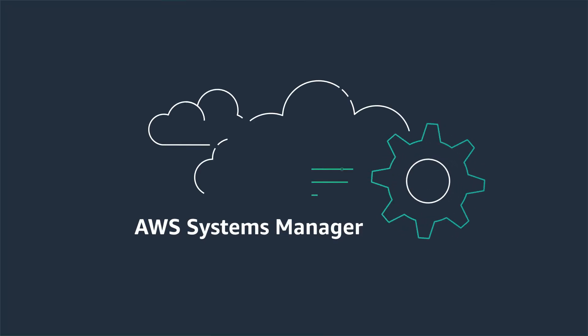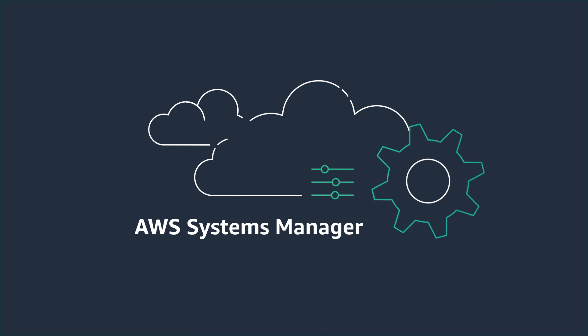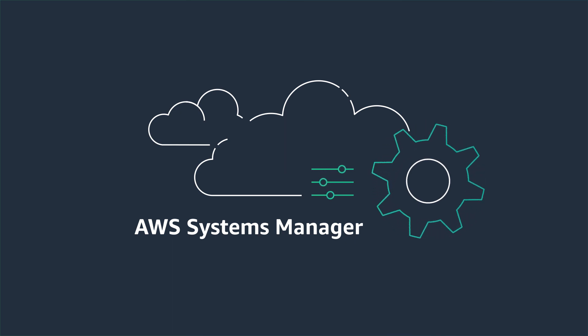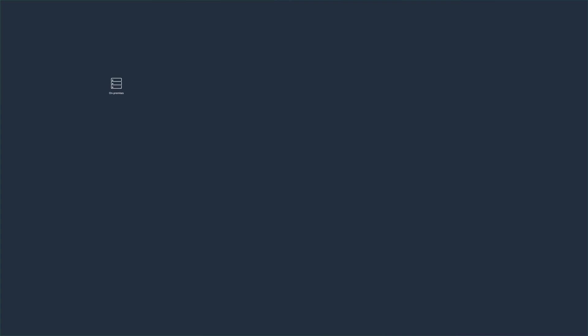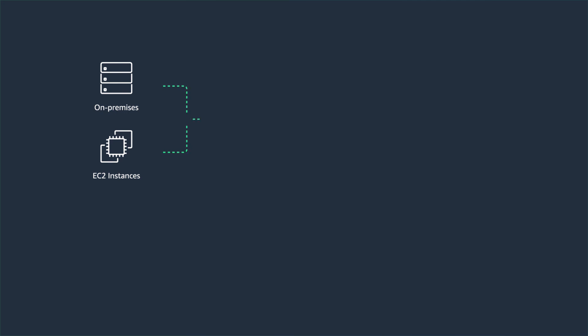As I started using AWS, I came across the AWS Systems Manager service — that was a game-changer for me. I could manage on-premises servers and Amazon EC2 instances alike by installing a single agent. Once the Amazon SSM agent was installed, servers and EC2 instances — essentially the whole inventory I managed manually — got discovered automatically as managed nodes.